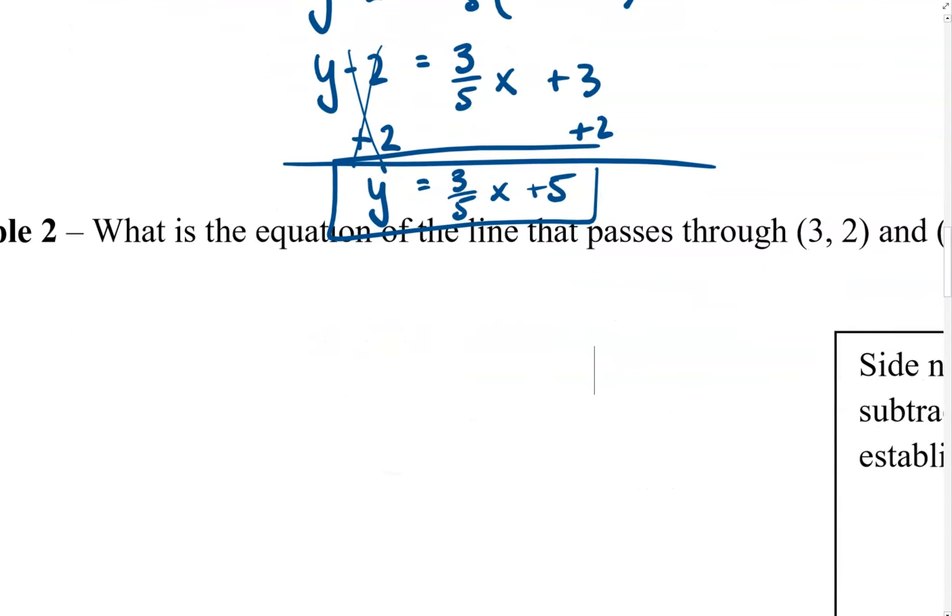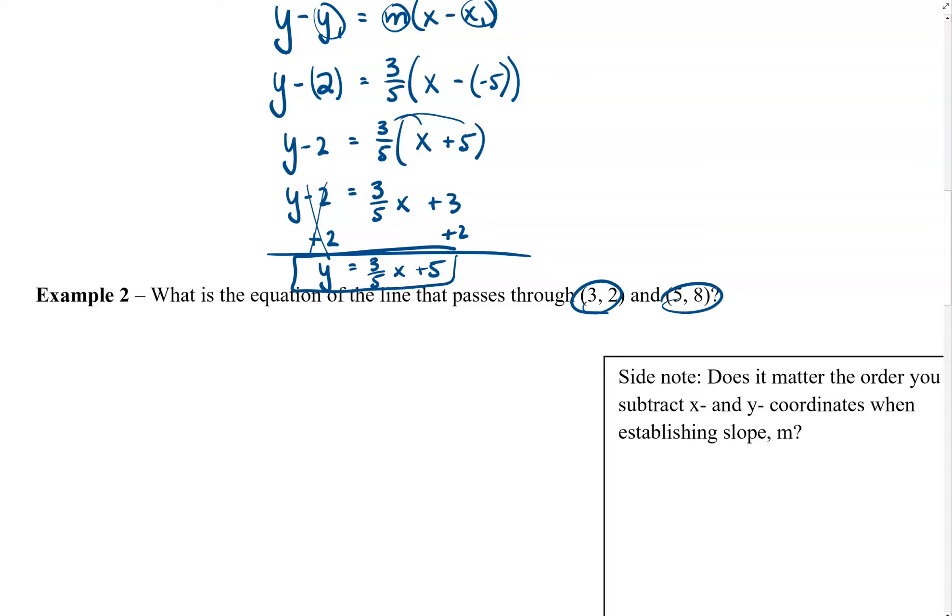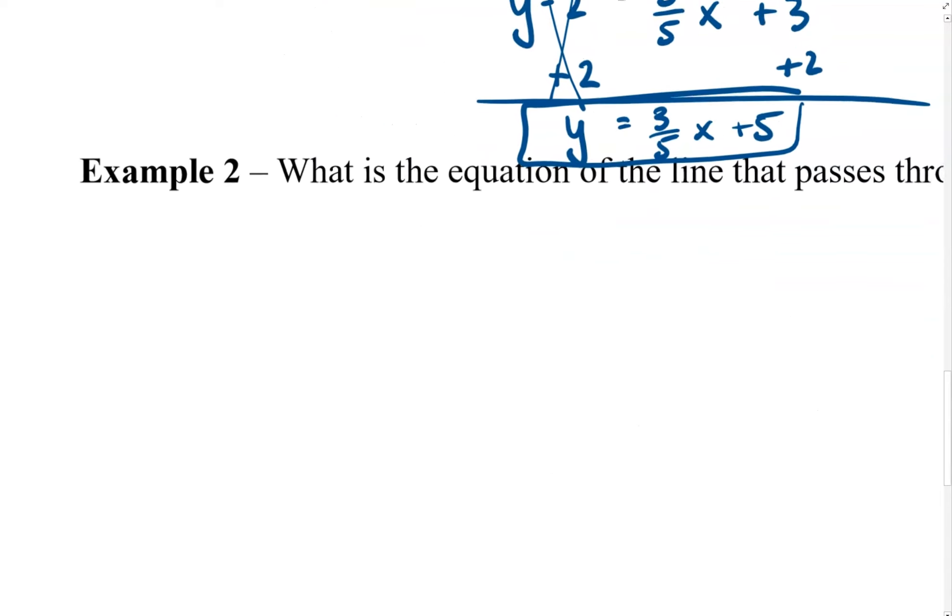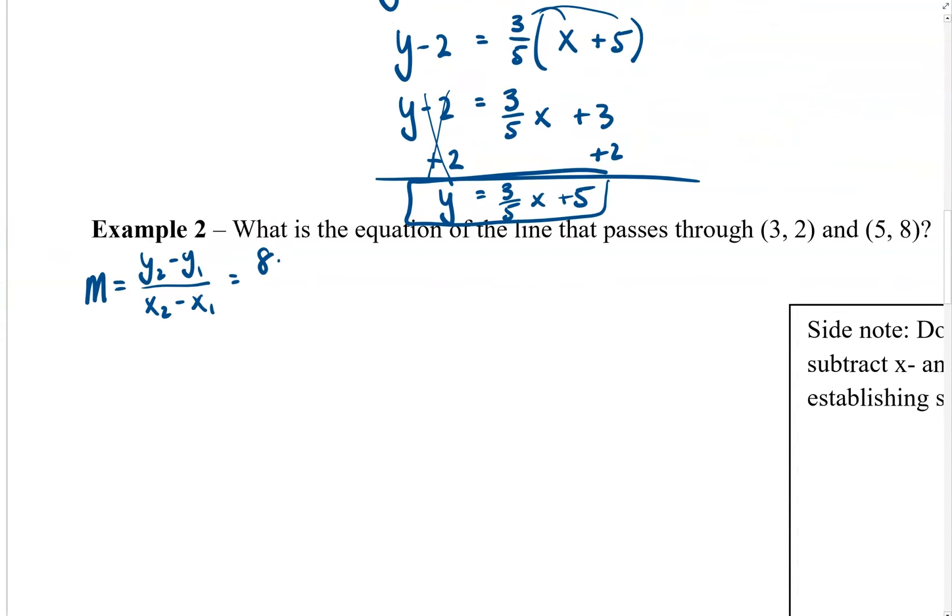In the next example, we're essentially asked the same thing. What is the equation of a line that passes through these two points? Well, as we've seen so far, points are helpful, but we also need to know the slope in between them. So, let's go ahead and calculate slope first. Slope is the result of the difference in the y values divided by the difference in the x values. So, in this case, we would have, let's say, 8 minus 2 divided by 5 minus 3, if I'm considering the y values, and then the x values subtracted. This looks like 6 divided by 2, or in other words, 3. The slope of this line is 3.